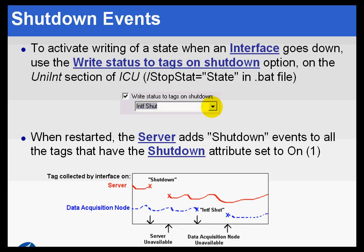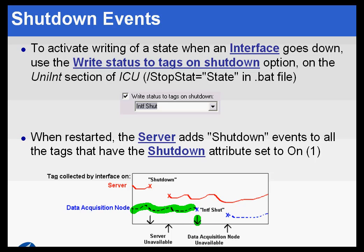The reason we do that is because we would like, when an interface shuts down, we would like to see that there's been a shutdown. So if you can see here, we've got data that's coming in, and then at this point in time the interface shuts down, and it starts back up here.